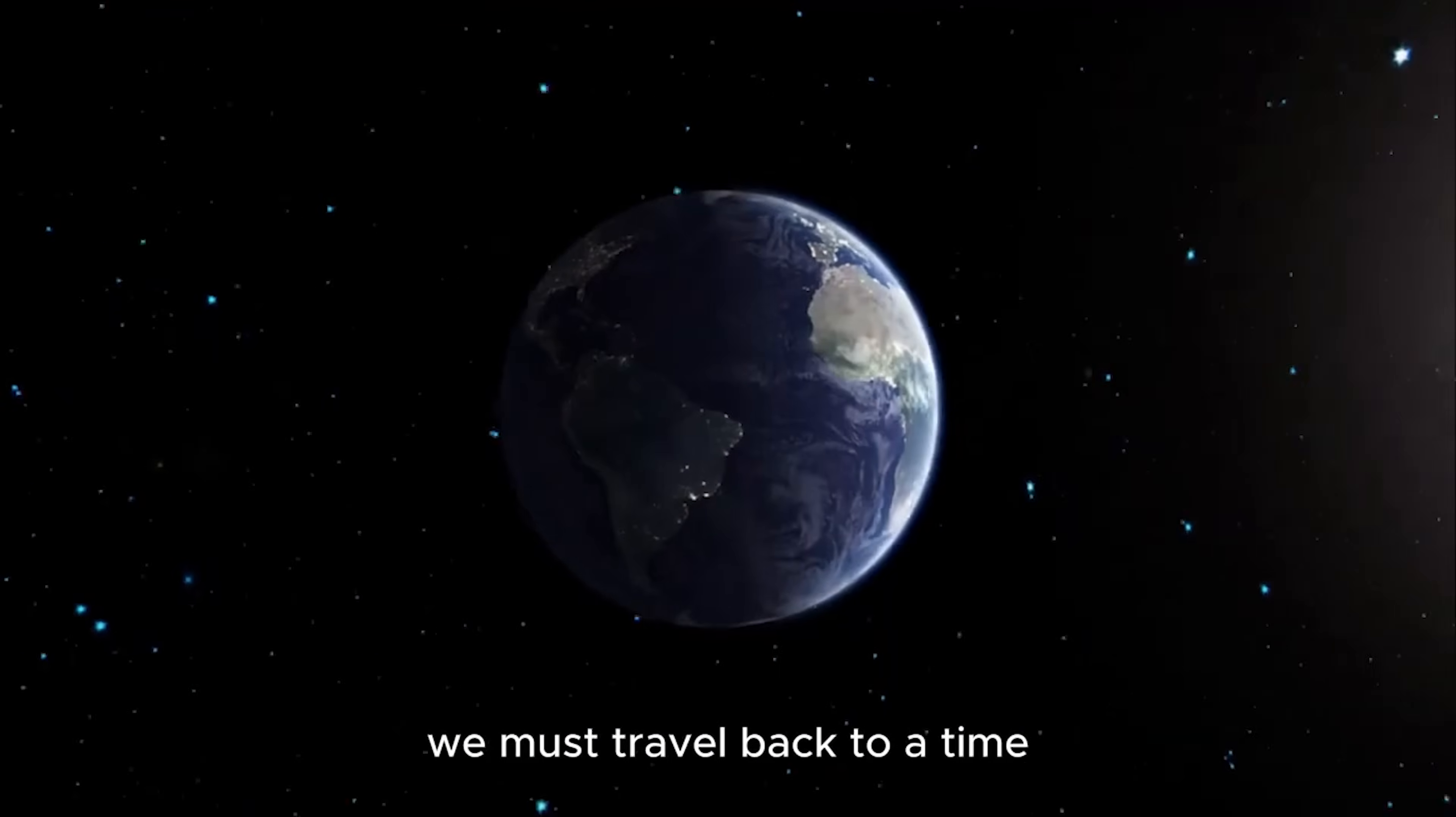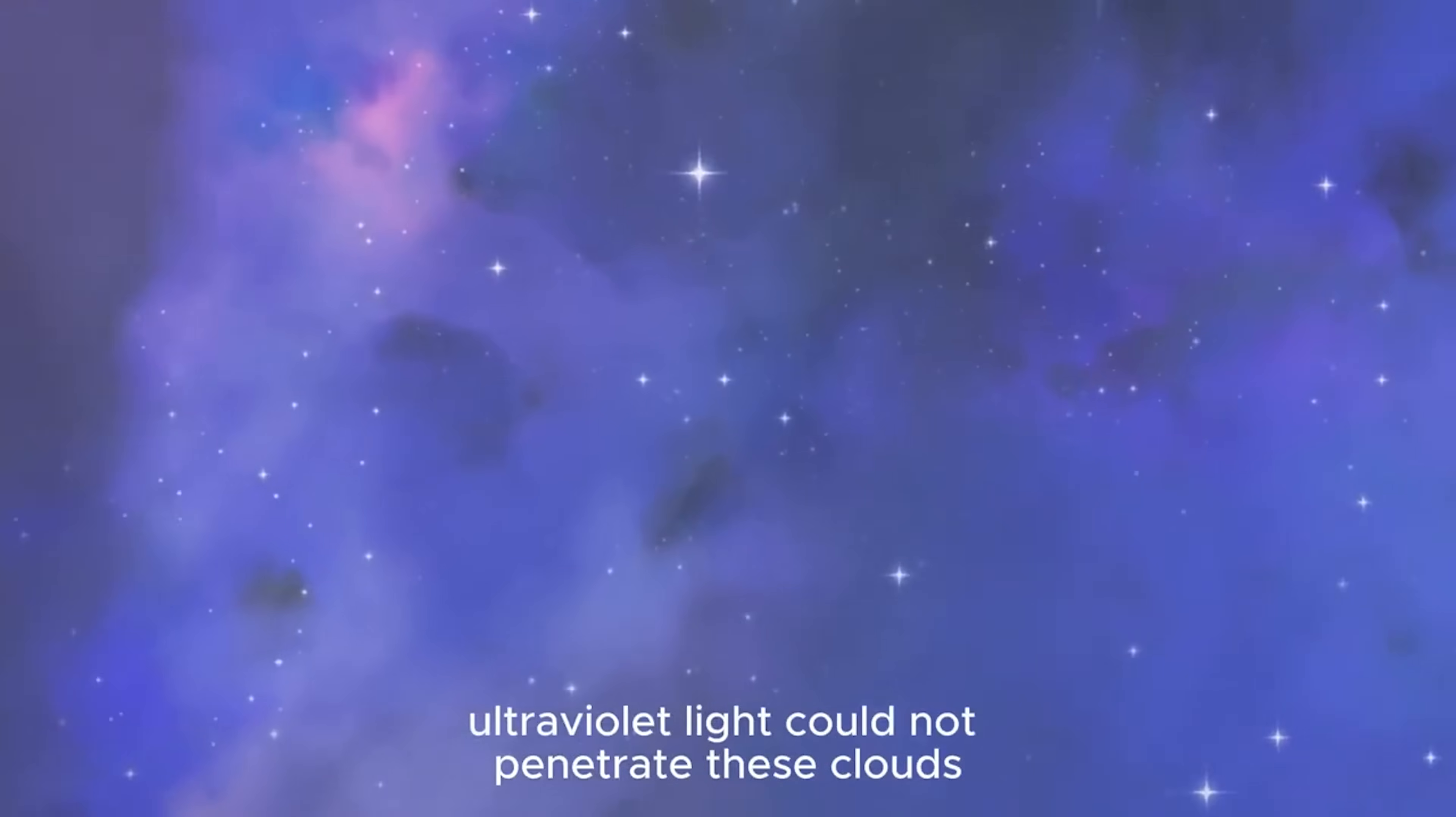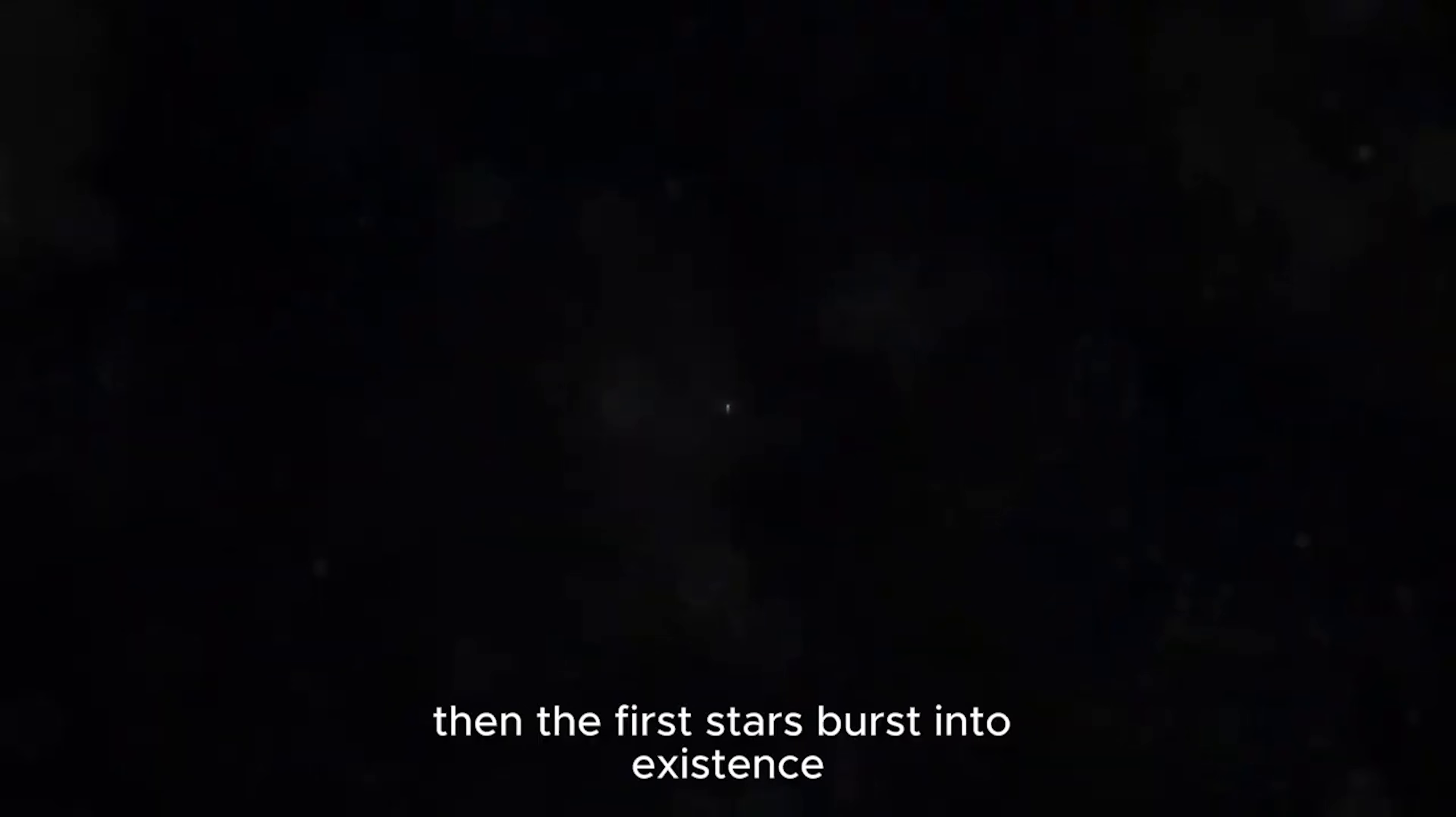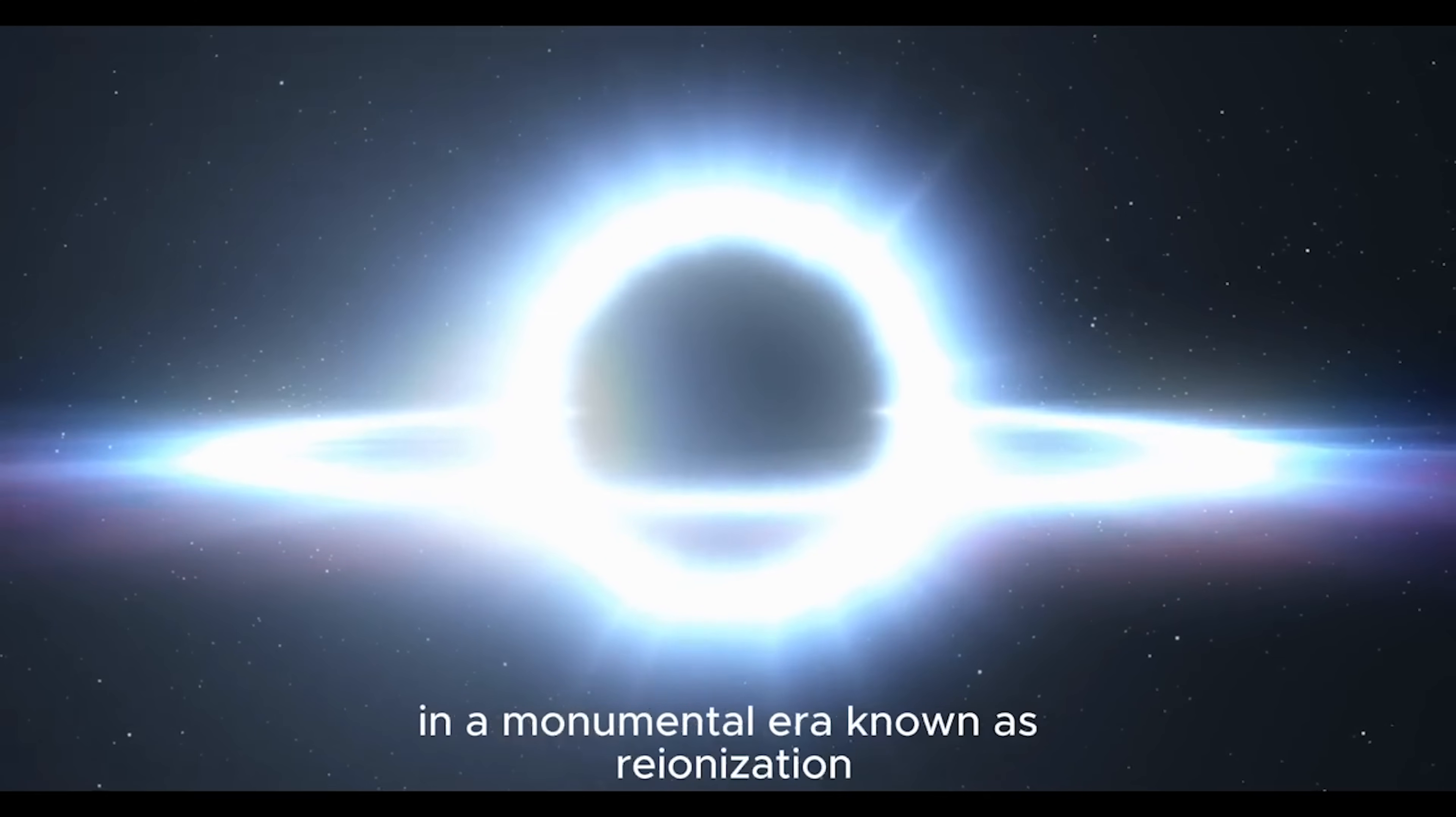To understand this, we must travel back to a time before the first stars ignited, when the cosmos was shrouded in a dense fog of neutral hydrogen. Ultraviolet light could not penetrate these clouds. The universe was silent, dark, and opaque. Then the first stars burst into existence, emitting powerful radiation that ionized the surrounding gas, gradually clearing the fog and lighting up the cosmos in a monumental era known as reionization, which began roughly 300 million years after the Big Bang.